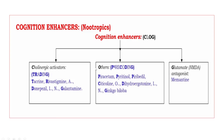Let us discuss one by one. Cholinergic activators — the mnemonic is TRDG. T means tacrine, R means rivastigmine, D means donepezil, G means galantamine.